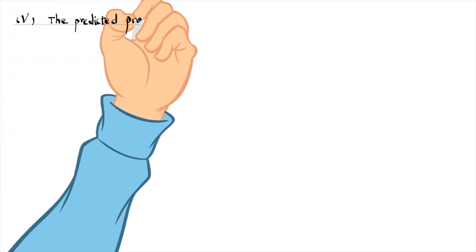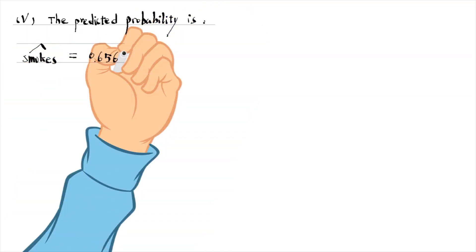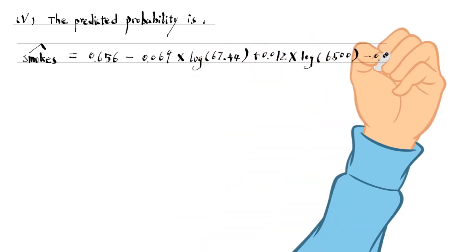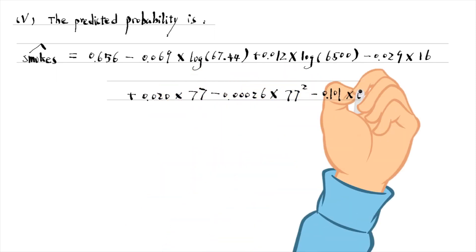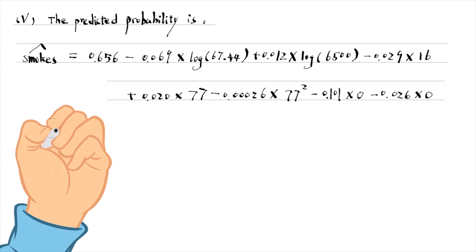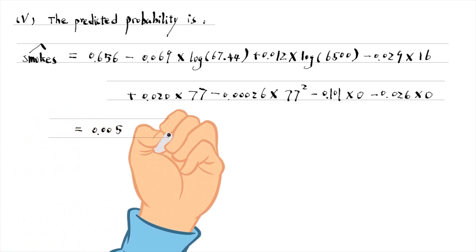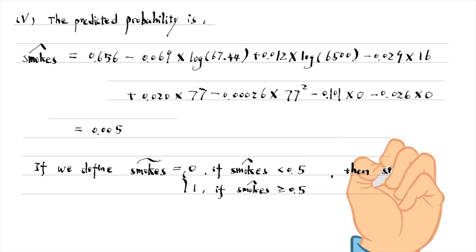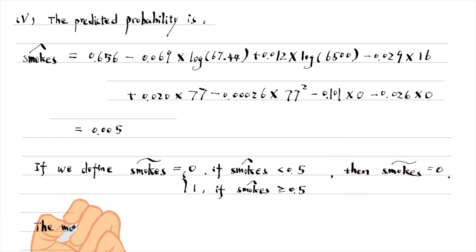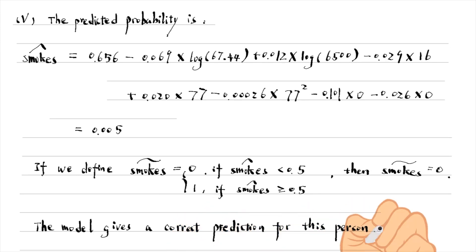For the last part, the predicted probability is 0.005 after we plug all the values into the estimated equation. If we define small tilde as 0 when the predicted probability is less than 0.5, then small tilde equals 0. Since the person is not a smoker, the model gives a correct prediction for this person.